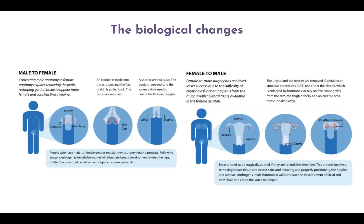For female-to-male surgery, there is a lower chance of complete success because of the difficulty of creating a functional penis from the much smaller clitoral tissue available in female genitals. The uterus and ovaries are removed. Breasts also need to be surgically altered if the person is trying to look less feminine; this involves removing breast tissue and excess skin, and reducing and properly positioning the nipples and areola. Androgens will stimulate the development of facial and chest hair and cause the voice to deepen.